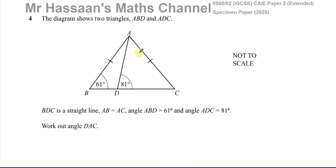These two sides are the same. Angle ABD is 61 degrees and angle ADC is 81 degrees, as shown in the diagram. We have to work out angle DAC.